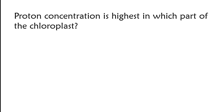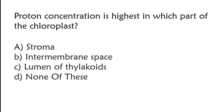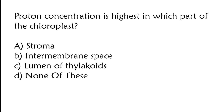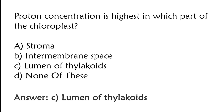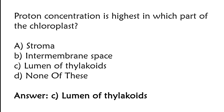Proton concentration is highest in which part of the chloroplast? Stroma, intermembrane space, lumen of thylakoids, or none of these. The correct answer is option C — lumen of thylakoids.